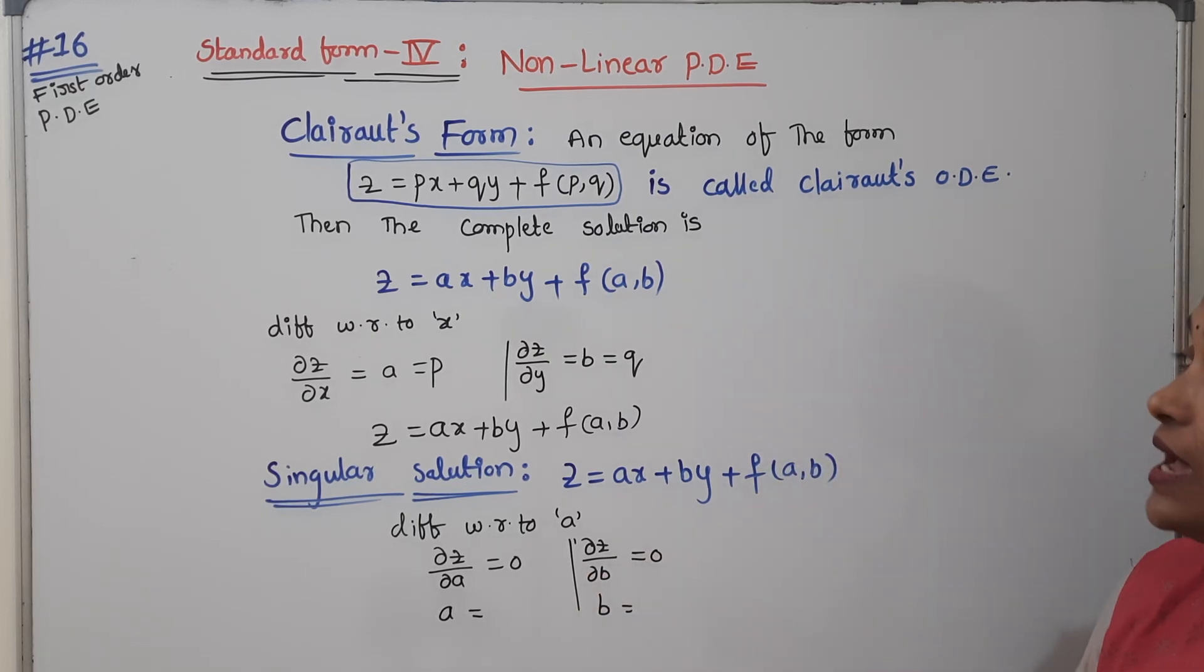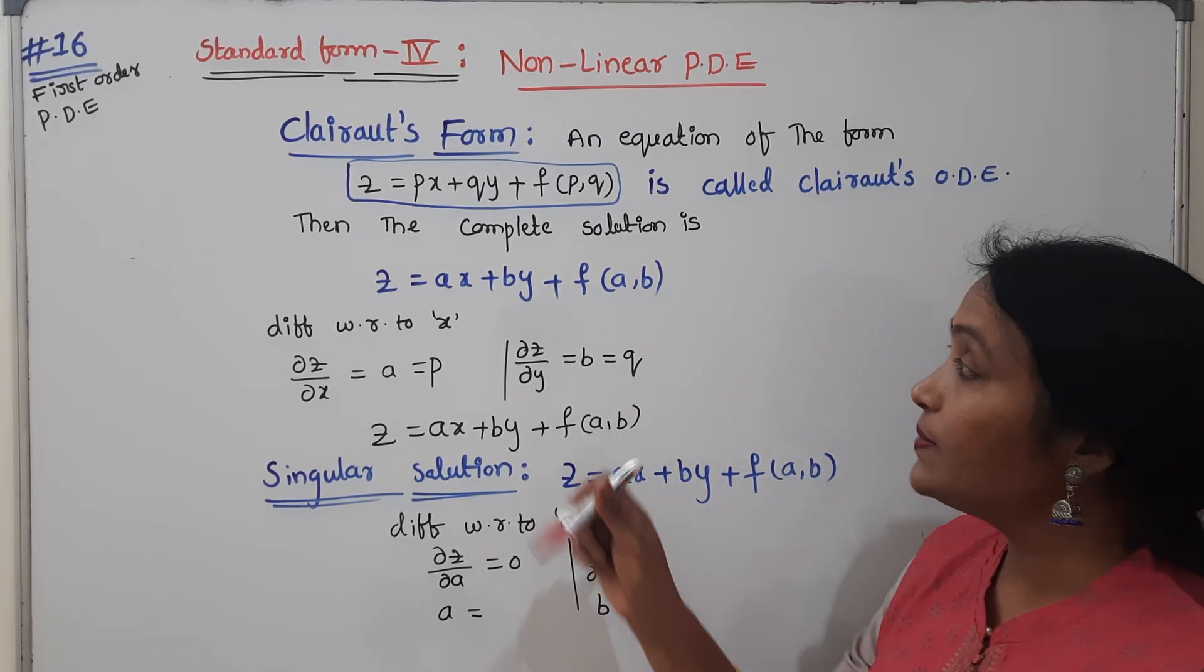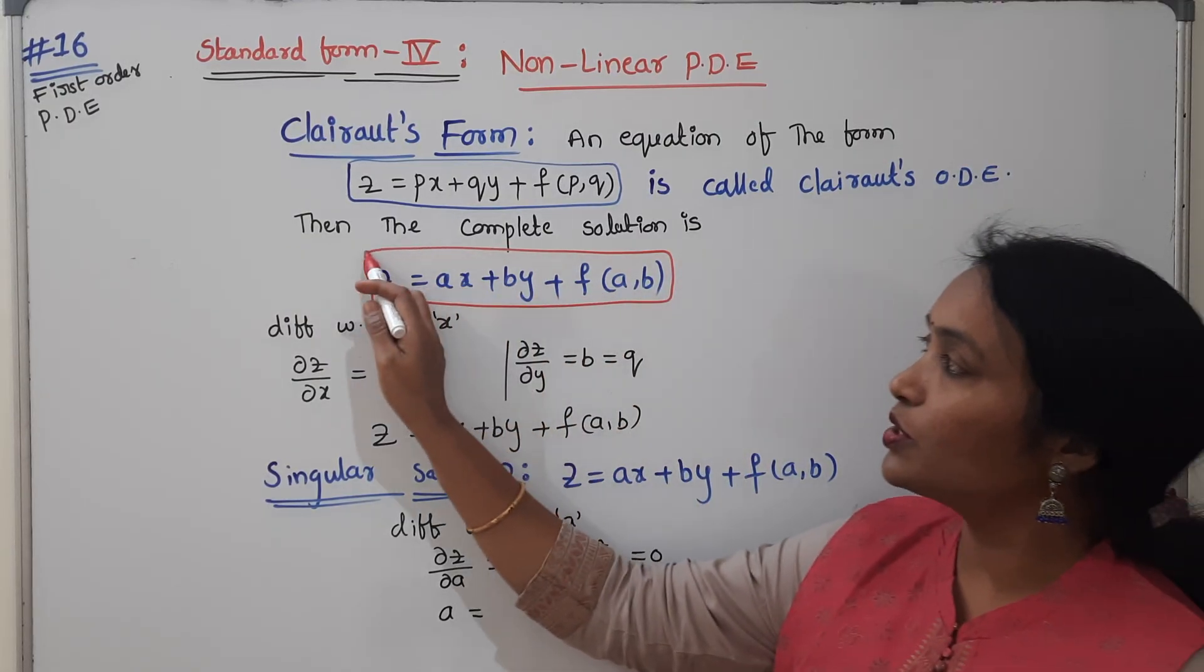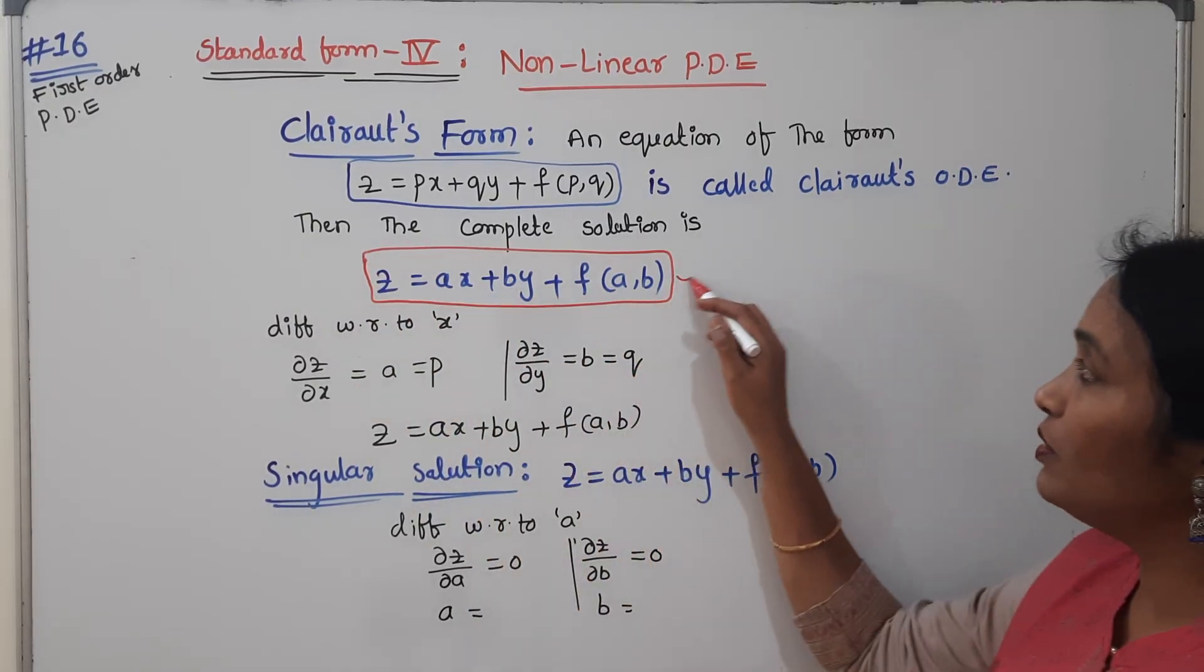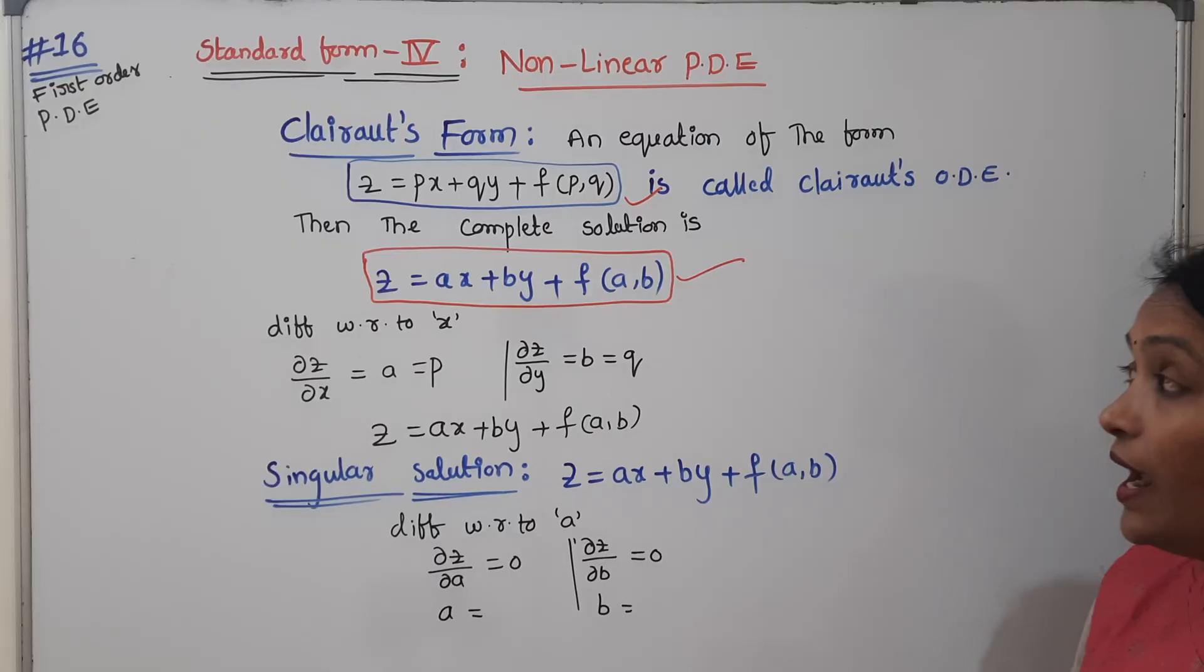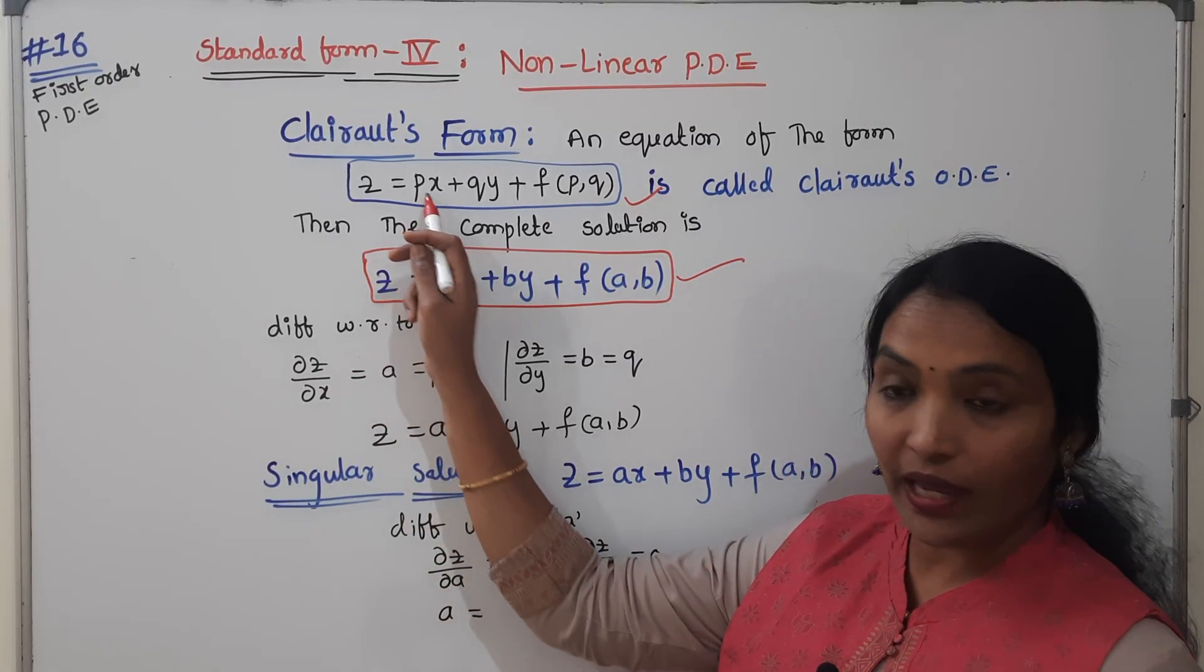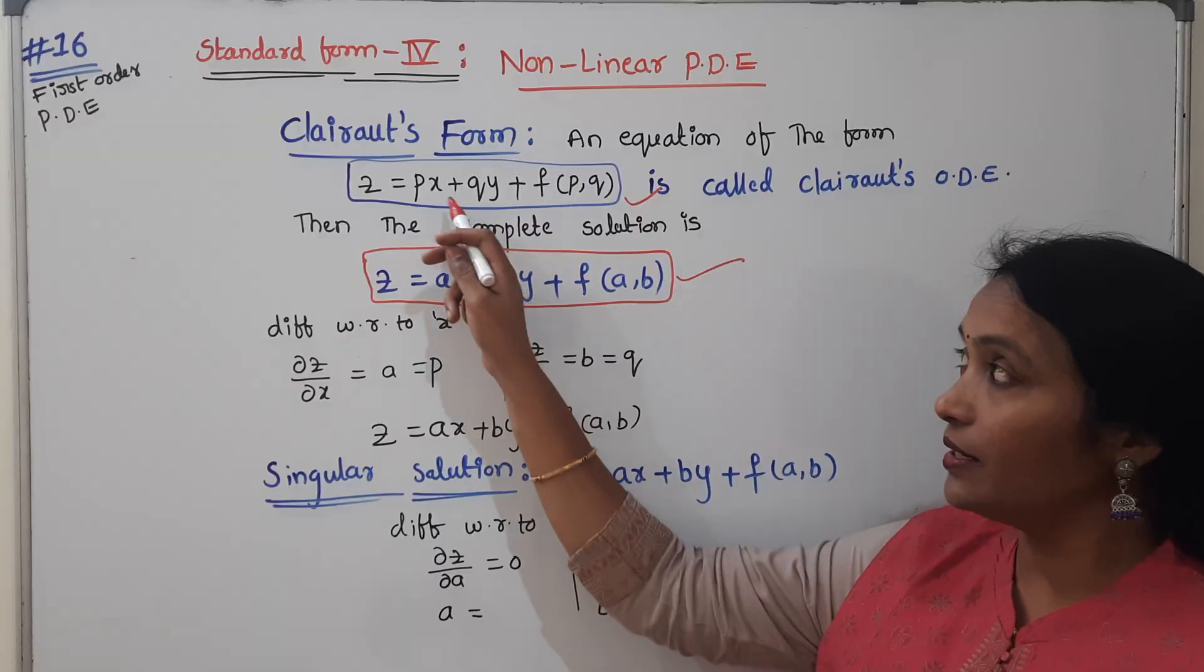It means that Z equals AX plus BY plus F of A, B. This is the complete solution for the given equation.